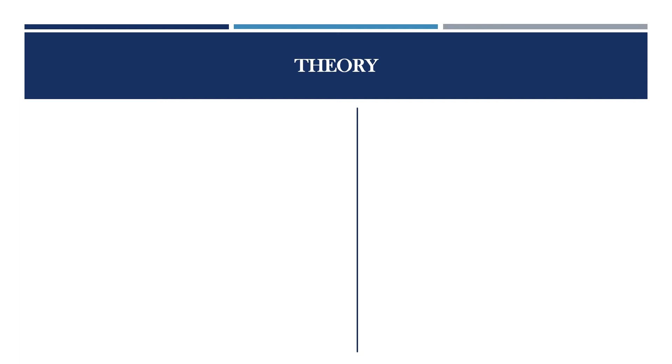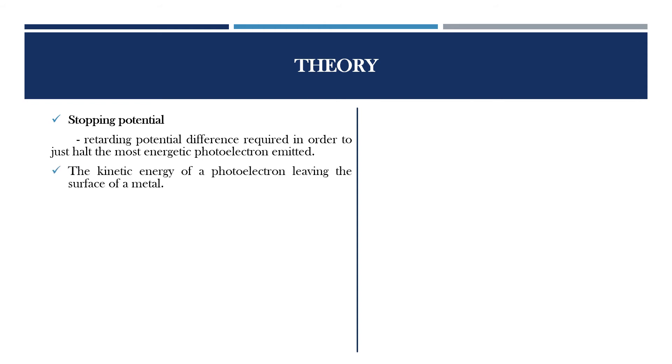The theory about Millikan's experiment. Stopping potential is the principle through which Millikan's experiment works. What is meant by stopping potential? It is a retarding potential difference required in order to just halt the most energetic photoelectron emitted. The kinetic energy of a photoelectron leaving the surface of the metal is given by half mv squared, which is equal to h nu minus phi.